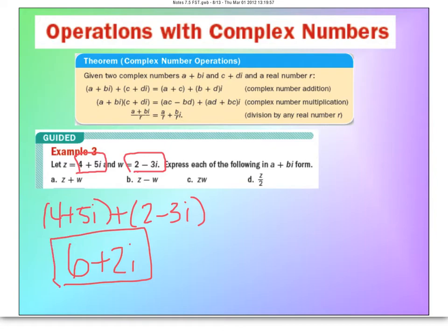Now complex numbers are always written real number first, followed by the imaginary. Okay, let's look at part B where they want us to subtract it.